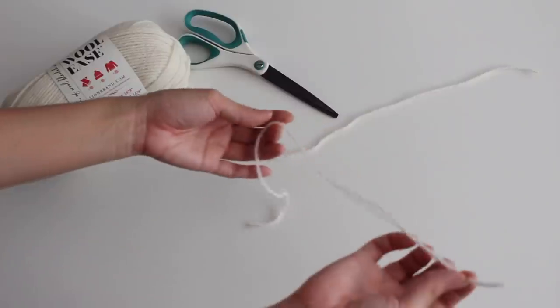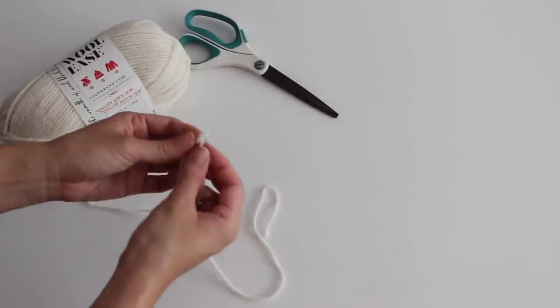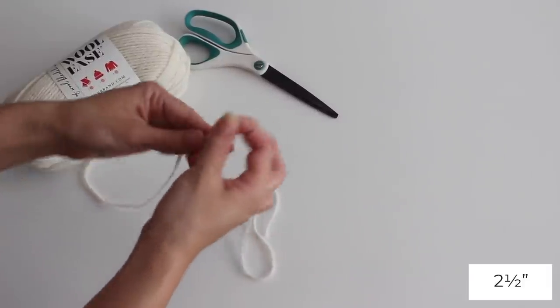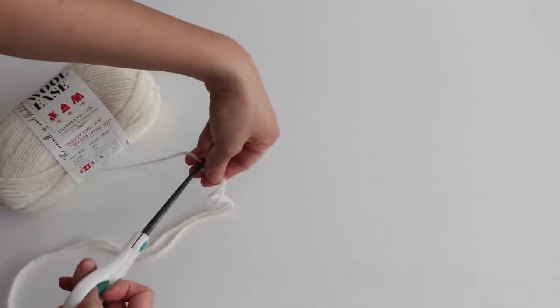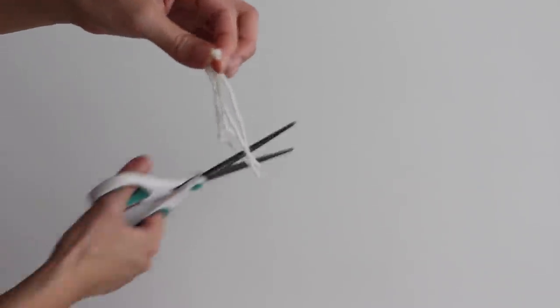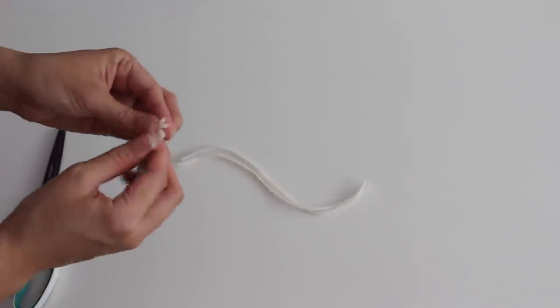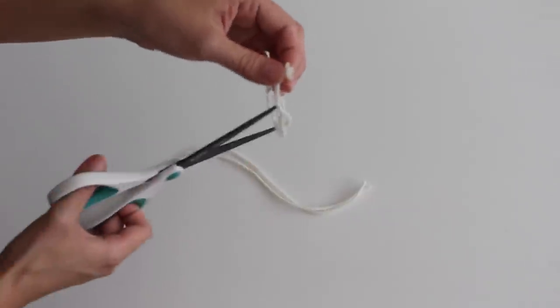Make sure that your yarn isn't too thin. I cut pieces of yarn to be 2.5 inches. I would cut a couple of 20 inch pieces, cut it in half making it 10 inches, and cut it in half 2 more times making it 2.5 inches.